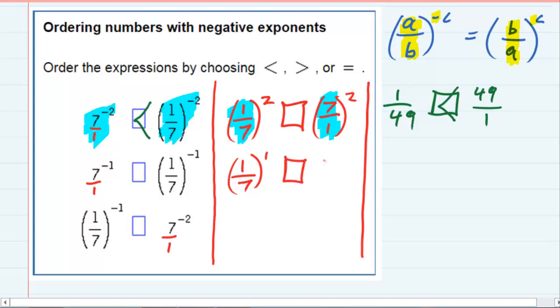And then the other side gets flipped, 7 over 1. Now those are both positive exponents, so I've got 1/7th. And 7 over 1 is just 7, so that's also going to be going this way, because the larger one is on the right-hand side.